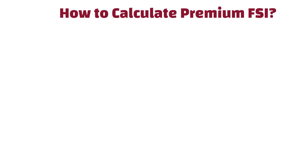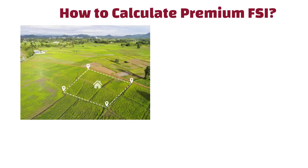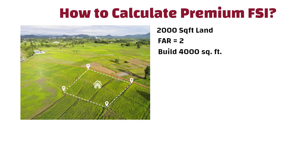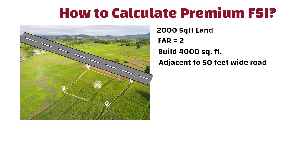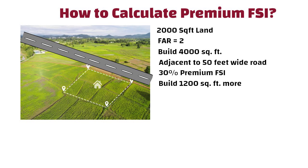How to calculate premium FSI? If you have a 2000 square feet land and the FAR is 2, you can build 4000 square feet on that plot. If this plot is adjacent to a 50 feet wide road, then you are eligible to avail 30% premium FSI. This means you can build 1200 square feet more than the already permissible 4000 square feet. With this, you can now build up to 5200 square feet on the plot.